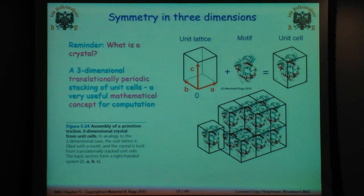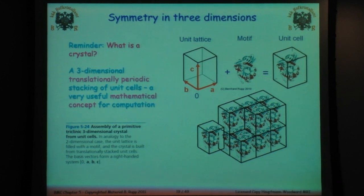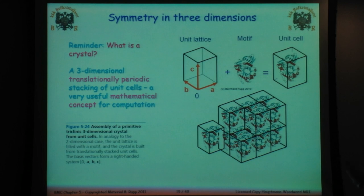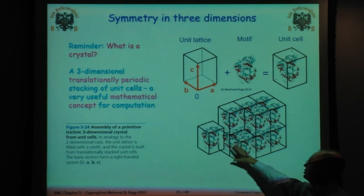This is symmetry in three dimensions — what we deal with in life. We have a unit lattice defined by cell parameters A, B, and C plus the angles. Alpha is the angle between B and C; beta is the angle between A and C; gamma is the angle between A and B. A useful way to remember: alpha has nothing to do with A, beta has nothing to do with B, and gamma has nothing to do with C. We have a three-dimensional motif; when we combine them, that makes a unit cell; when we pack the unit cell with symmetry elements, it makes the three-dimensional crystal.